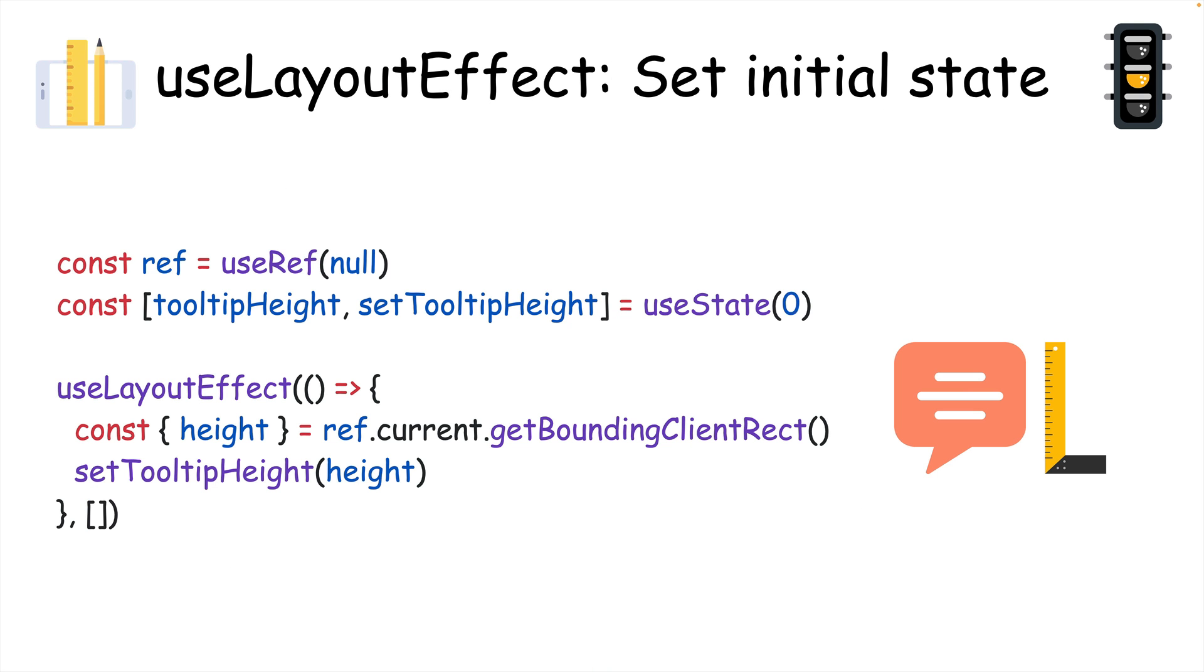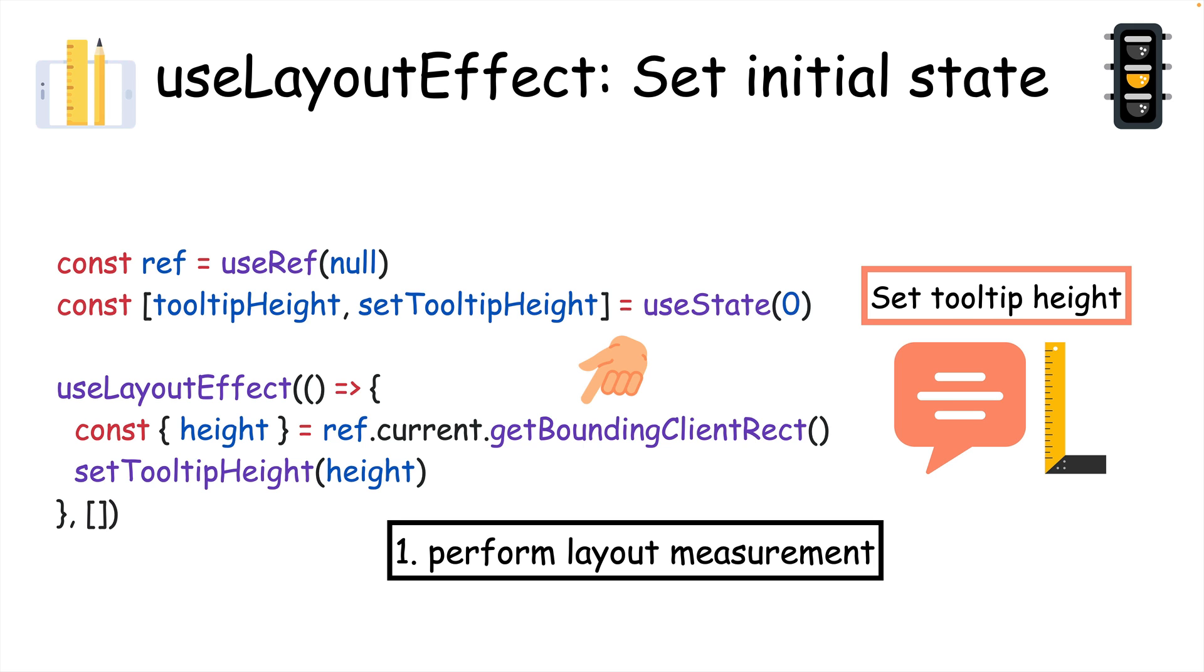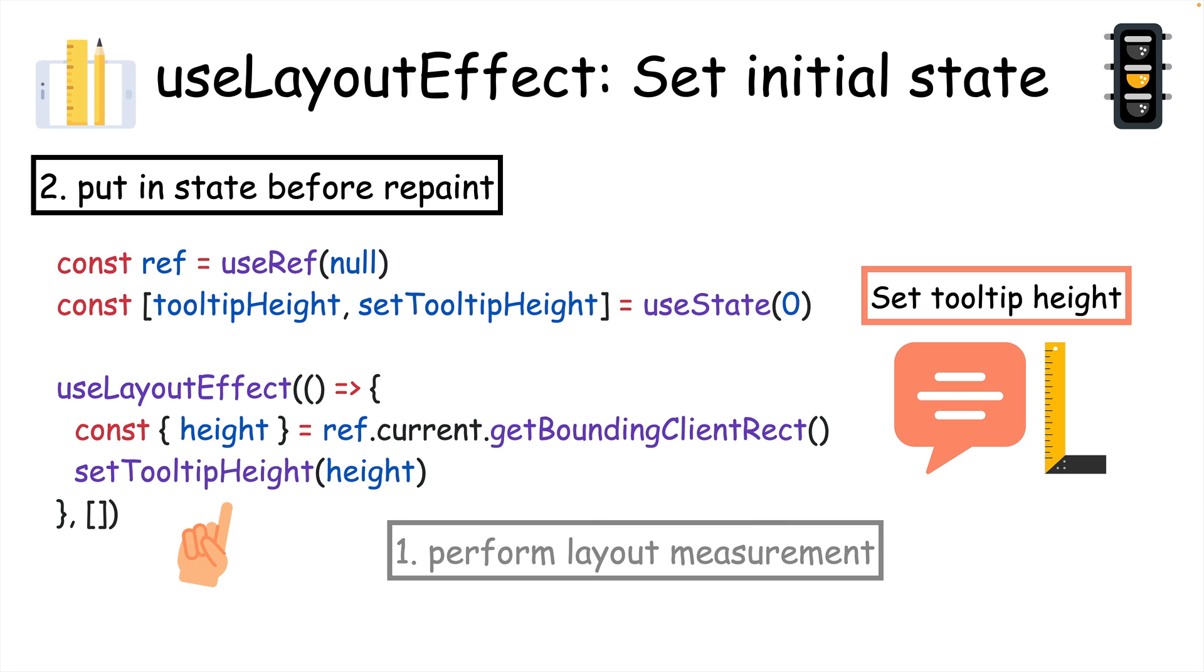useLayoutEffect is good to use, for example, when you want to get some initial state from a browser API, like this one where we're measuring the height of a tooltip with getBoundingClientRect, and then setting it in state before the browser repaints and it's visible to the user.